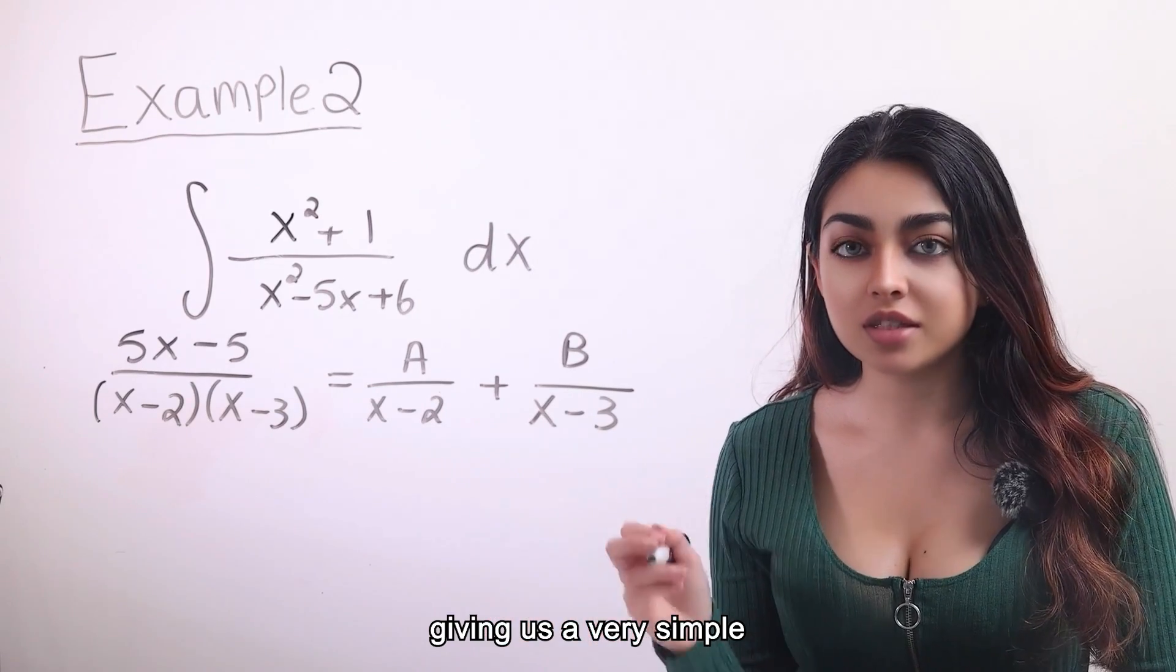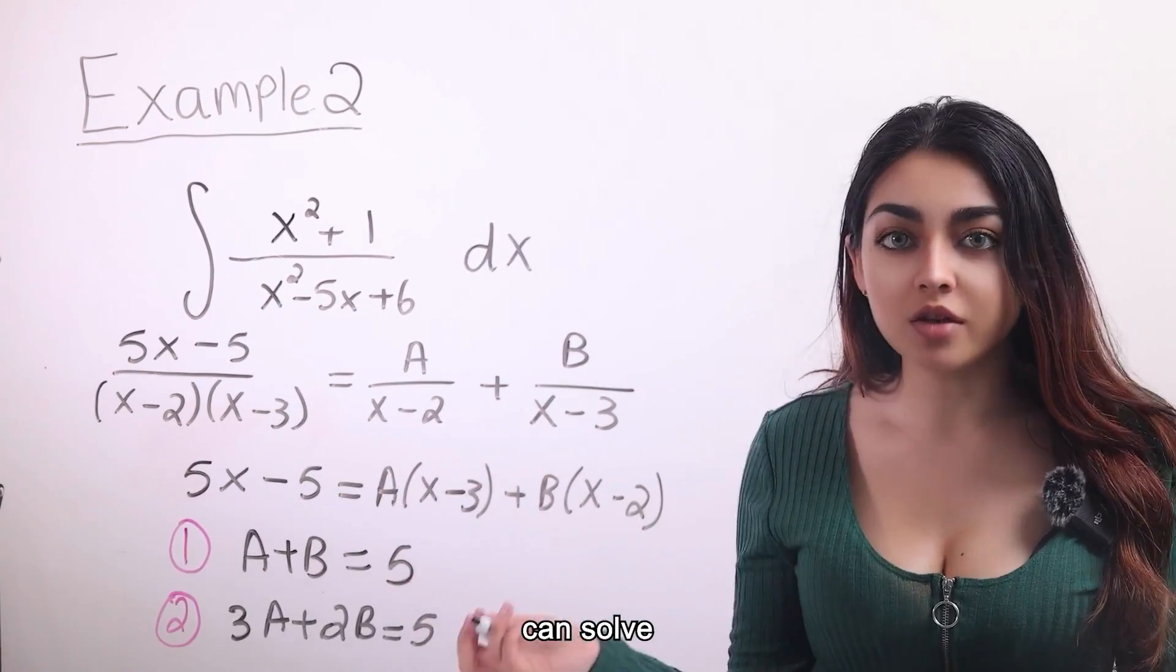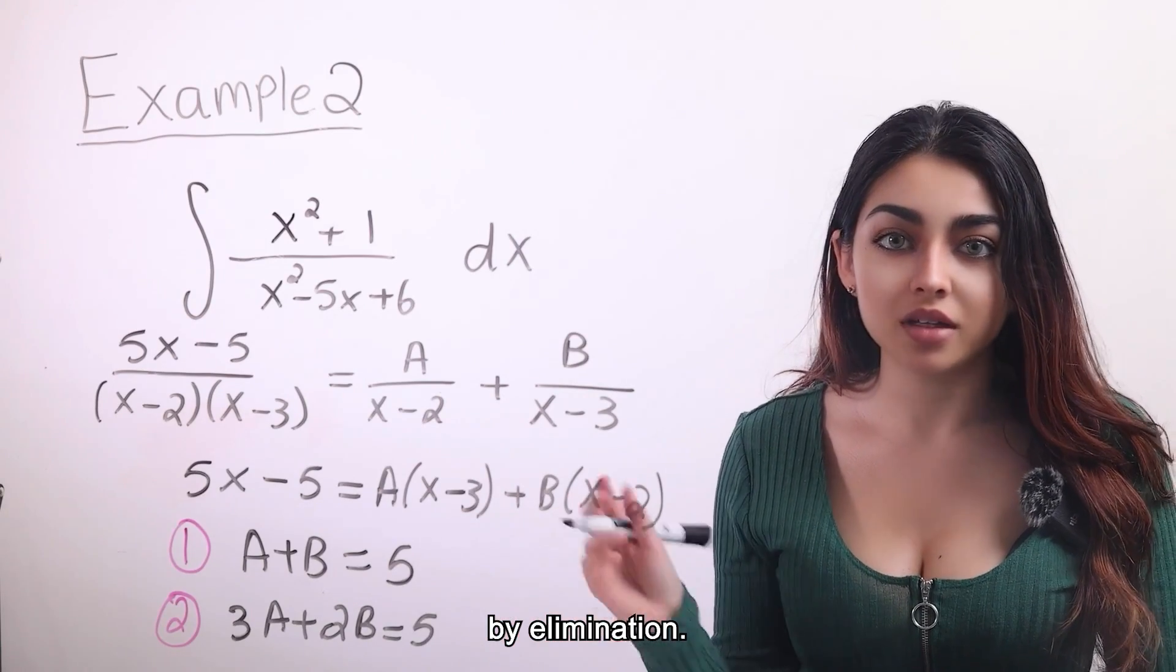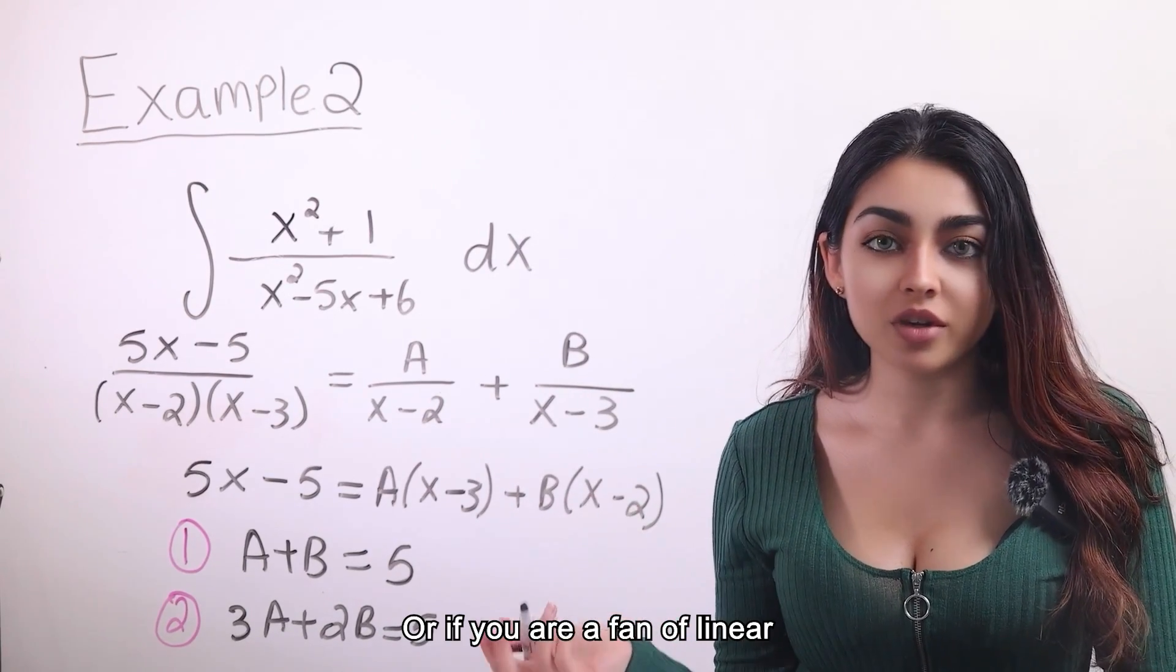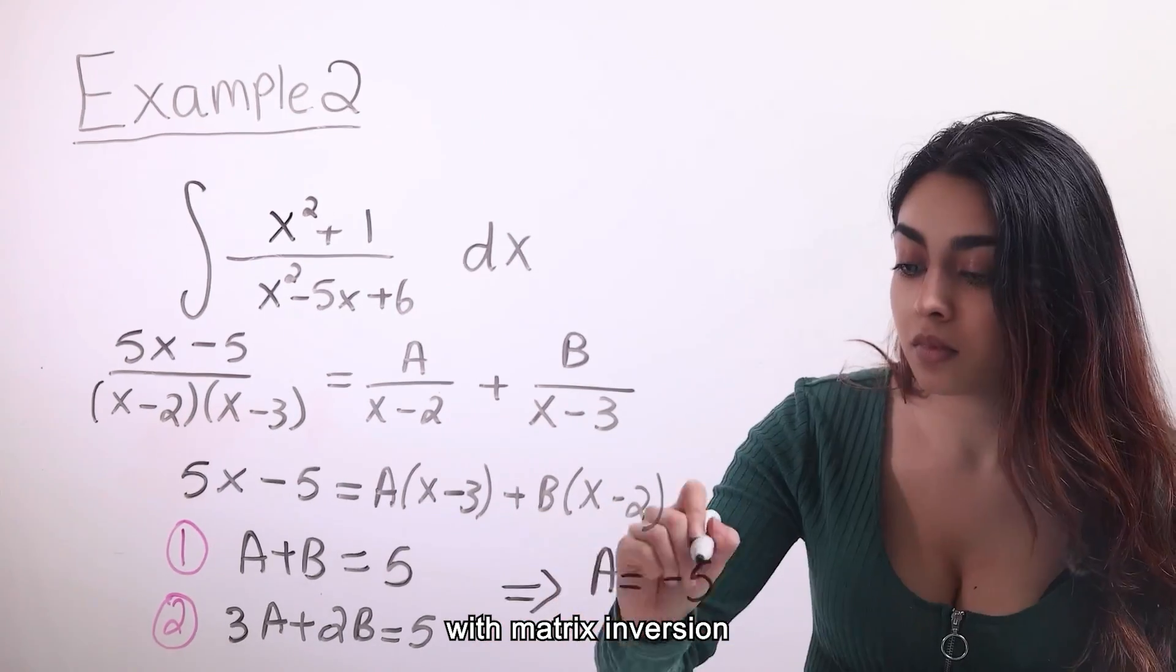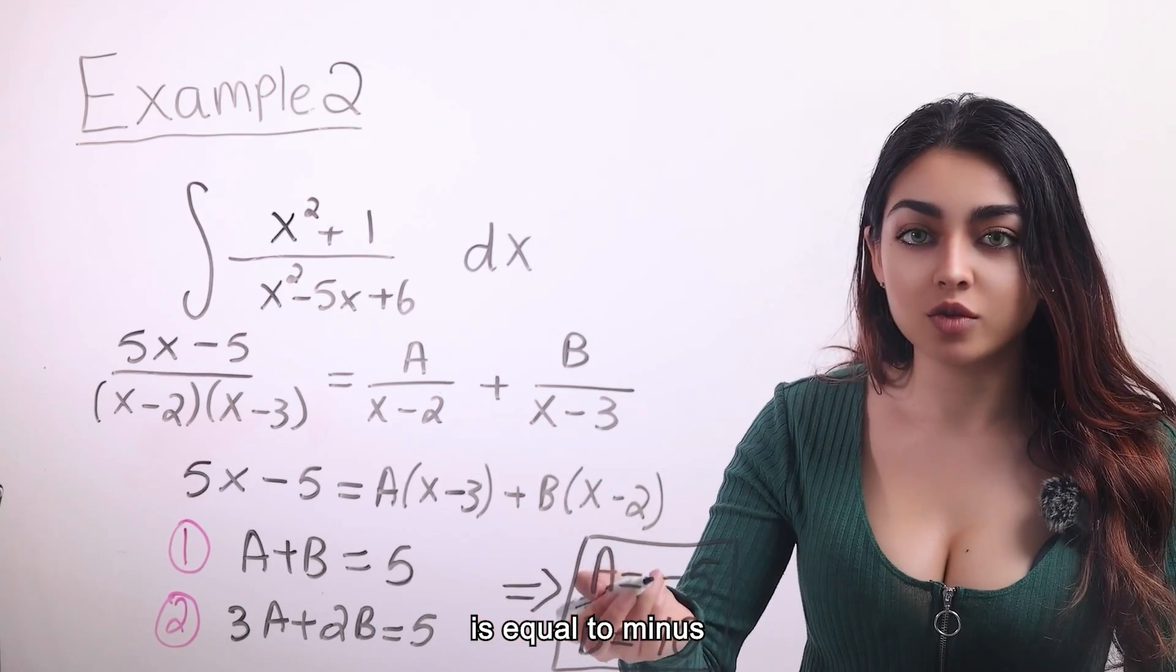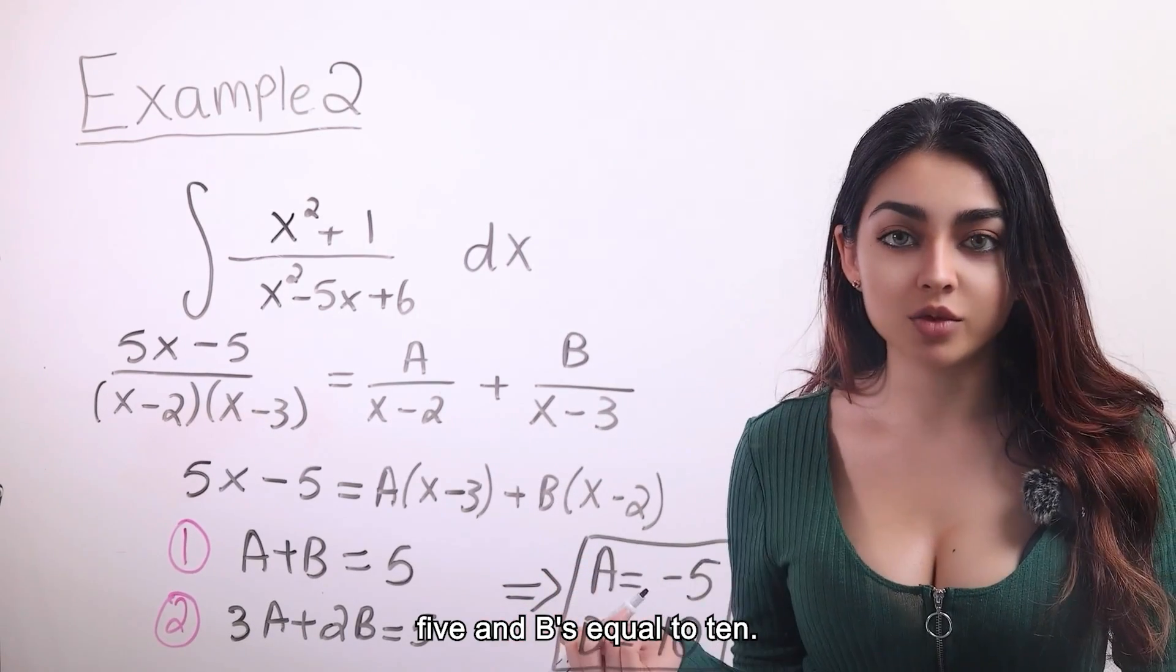We can find a and b by comparing the two sides of the equation, giving us a very simple system of equations. And you can solve the system of equations by elimination or if you are a fan of linear algebra, then you can solve it with matrix inversion. And we can very easily see that a is equal to minus 5 and b is equal to 10.